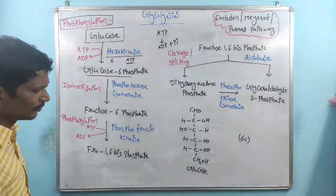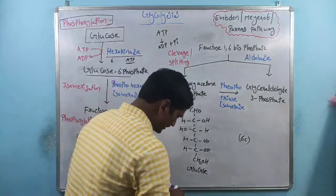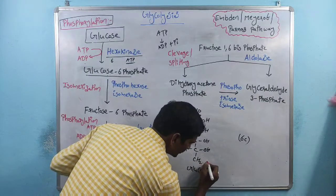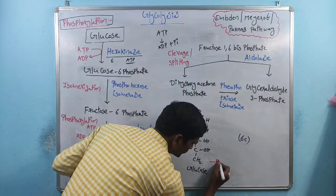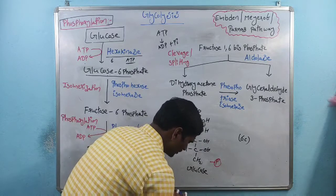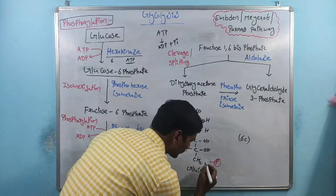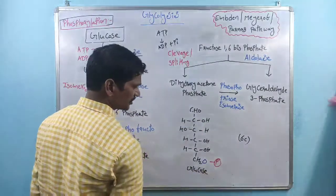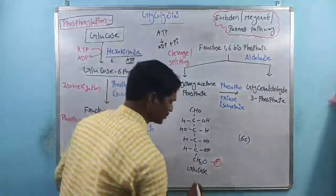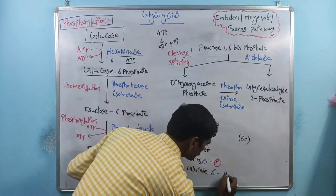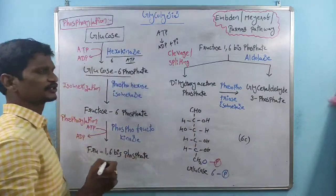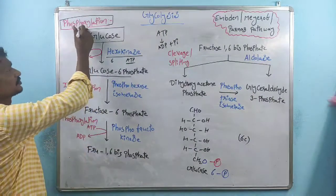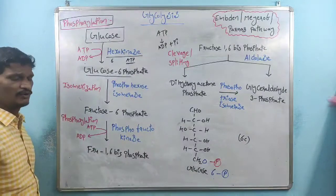So the glucose is converted to glucose-6-phosphate. Once that phosphorylation takes place, phosphate is bound at the sixth carbon position. Because this is the sixth carbon atom, at the sixth position phosphate is added — that's the reason why this one is called as glucose-6-phosphate. This step is called as phosphorylation.